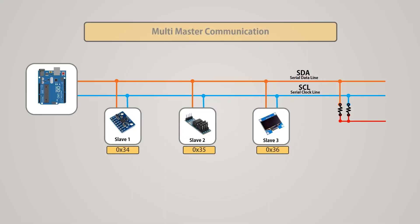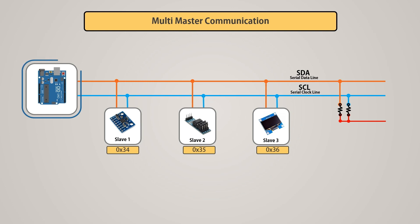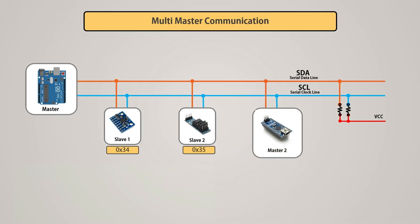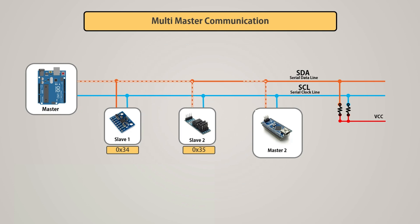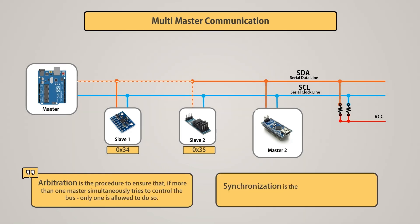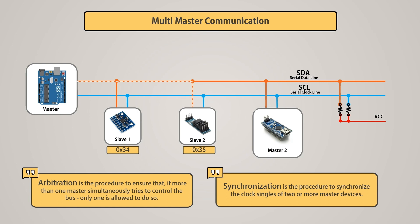The I2C bus was originally developed as a multi-master bus, meaning more than one master can attempt to control the bus simultaneously without corrupting the message. In such a case, each device needs to cooperate with the fact that another device may currently be talking and the bus is therefore busy. Arbitration is the procedure to ensure that if more than one master simultaneously tries to control the bus, only one is allowed to do so.